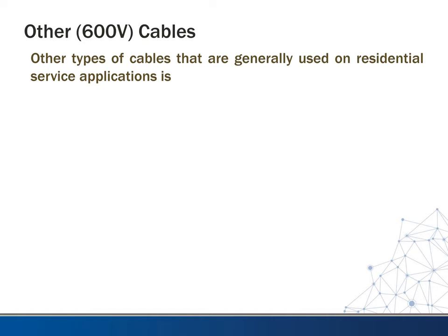There are some other cable types worth knowing about. One is TC, or tray cable, regulated by Article 336. You might see this in industrial applications — if they're running power in cable tray out to assembly line motors and loads, they'll often use tray cable. Be sure to be familiar with Article 336 if you're going to install that.